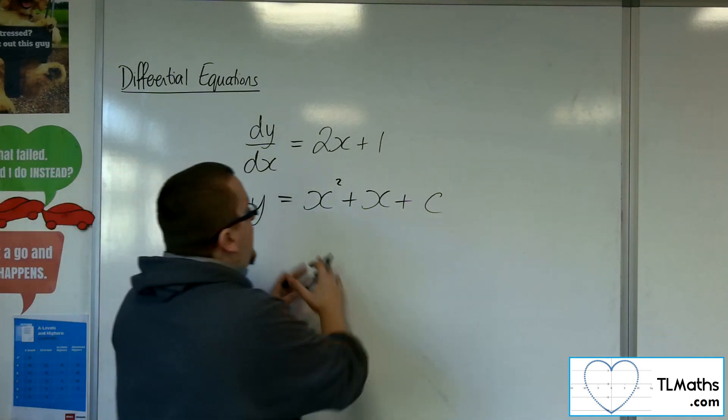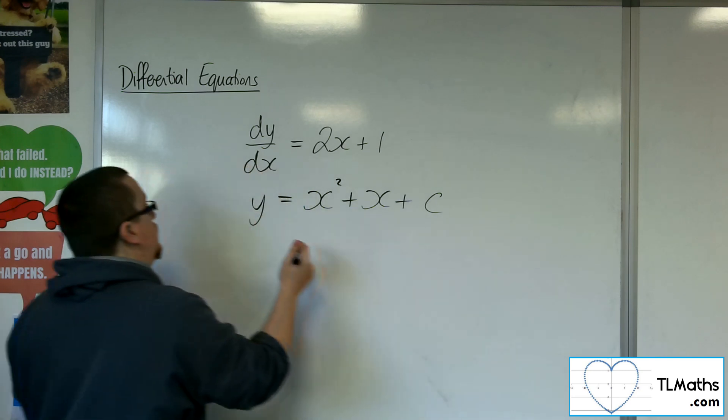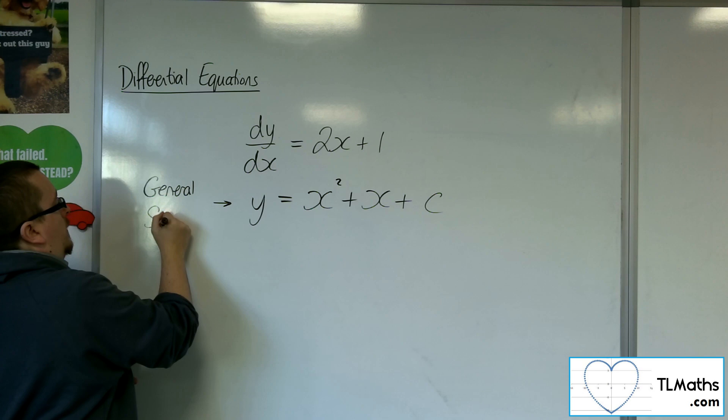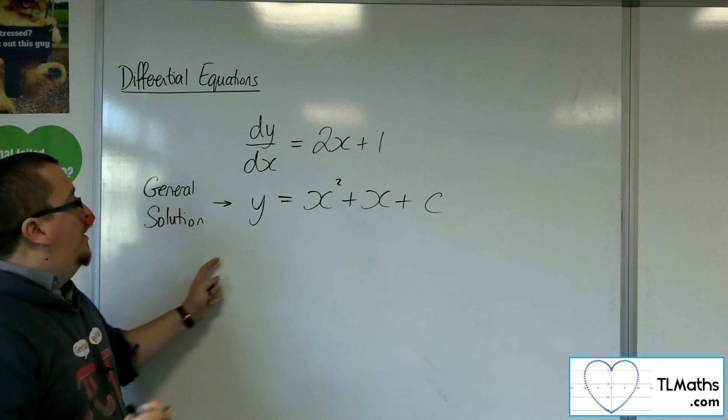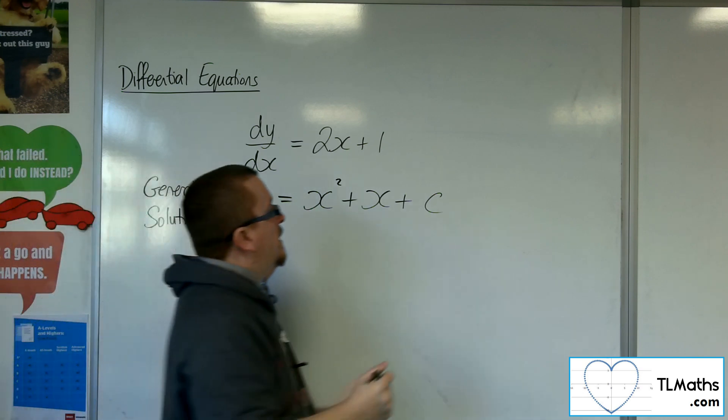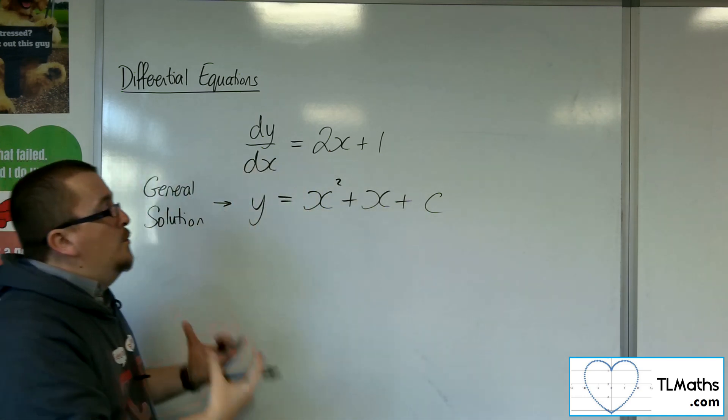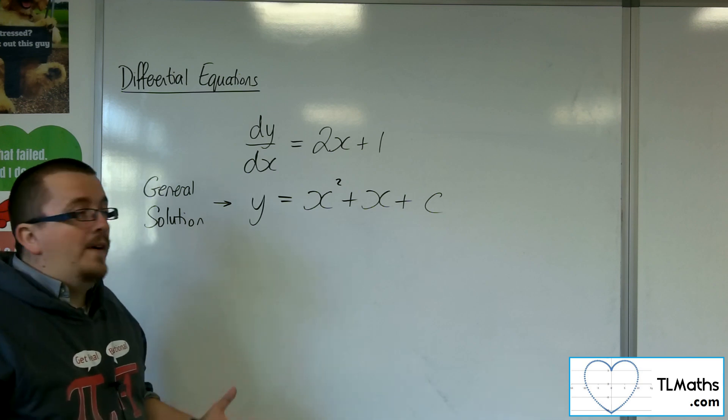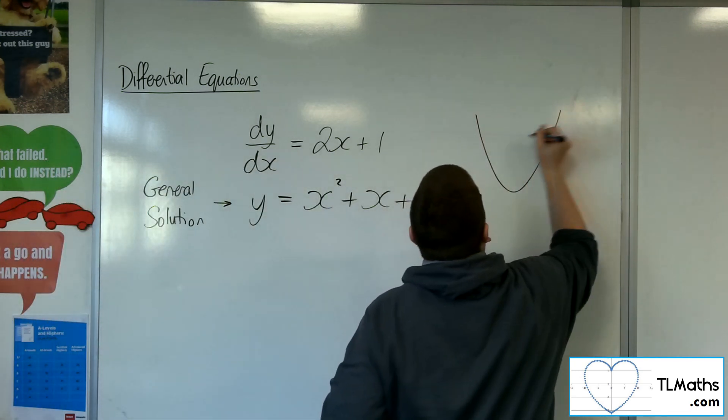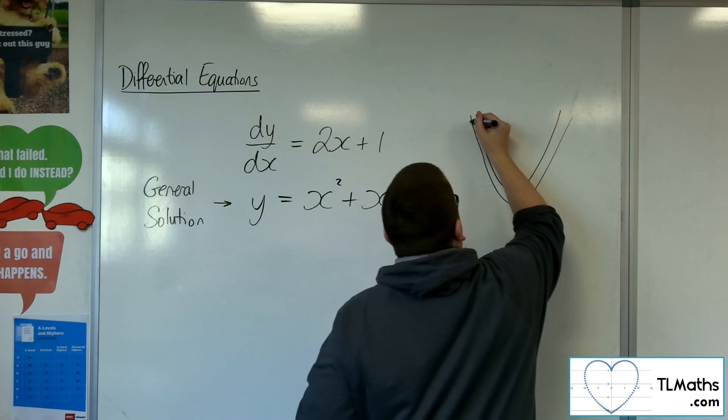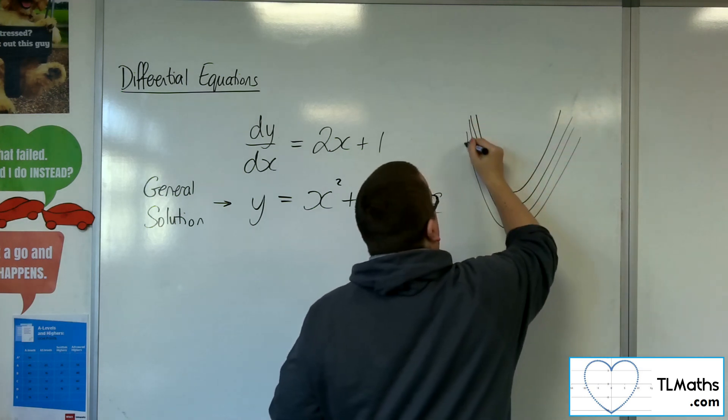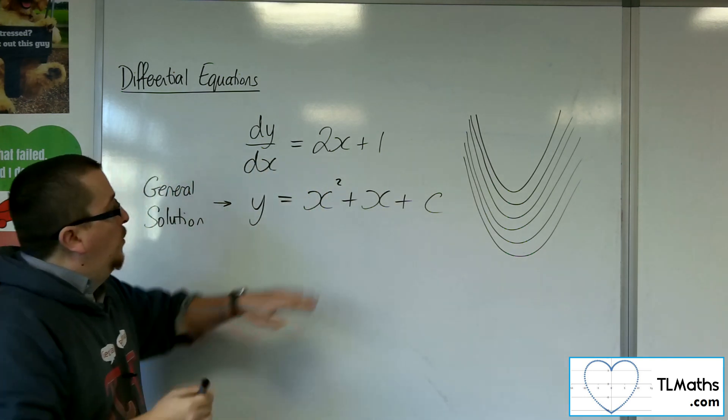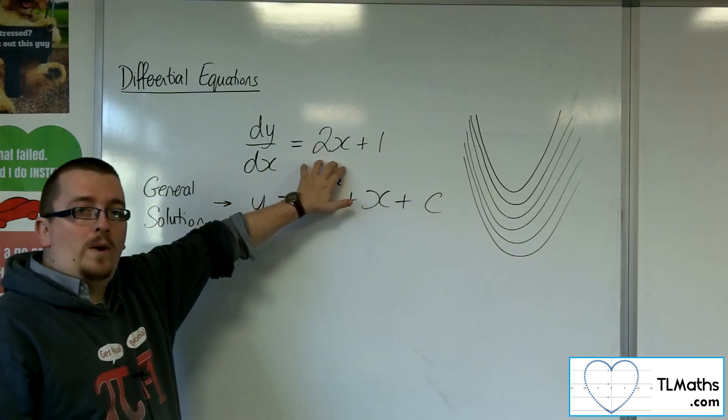So what we get here is what is referred to as a general solution, because this curve, because of that plus c, we don't have a specific value for it. So it could be really any real value. So this actually gives you a whole family of parabolas, because each one has a different value of c. However, they all solve this original equation.